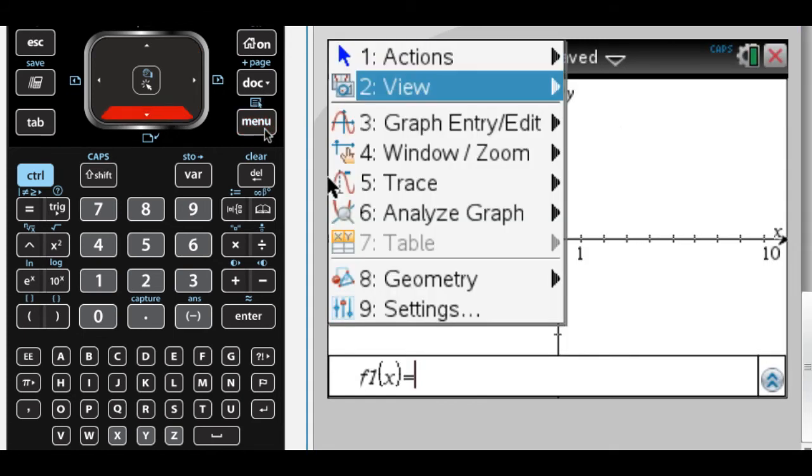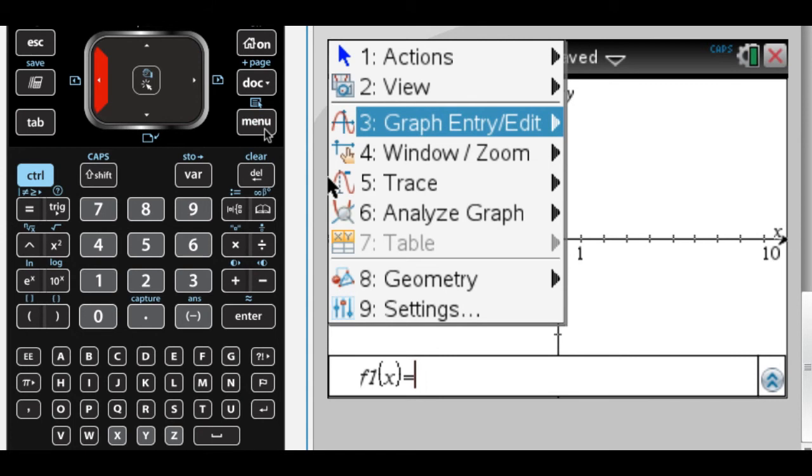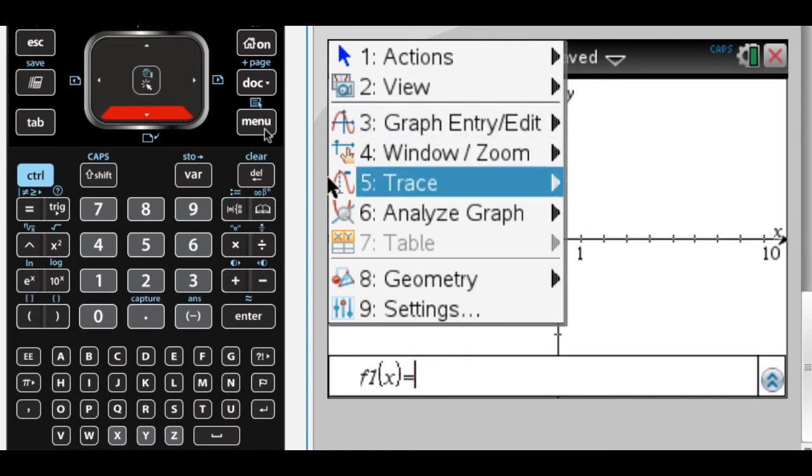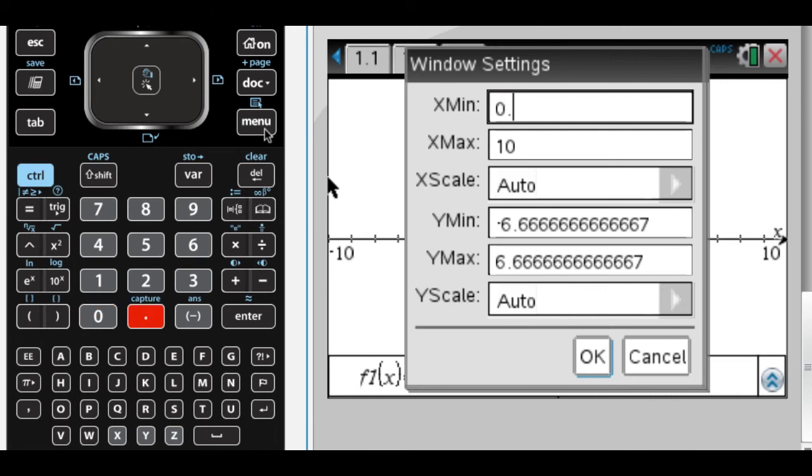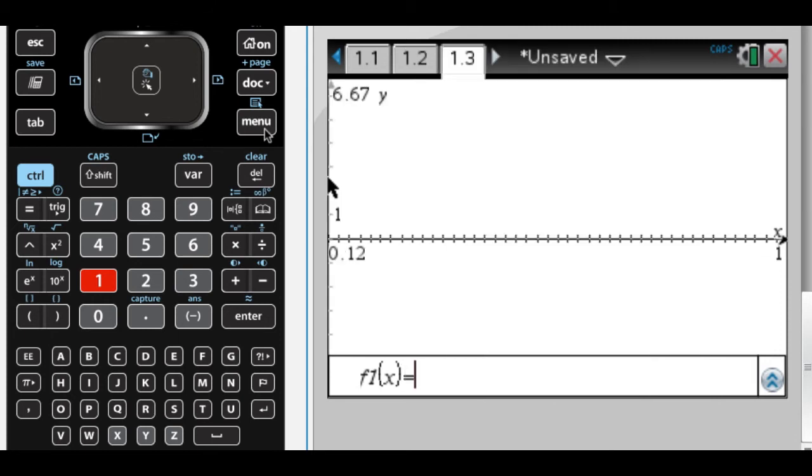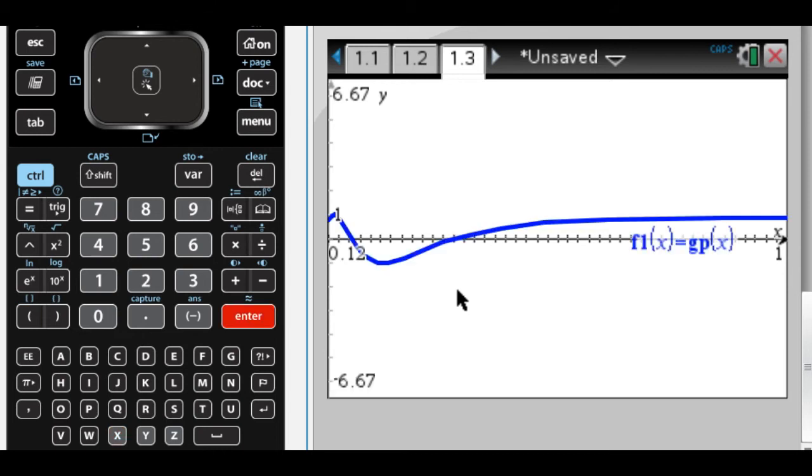Let's change the window before we graph. Window 0.12 to 1. And horizontal tangent line means that the derivative is equal to 0. So we need to graph g prime of x.